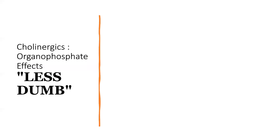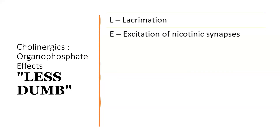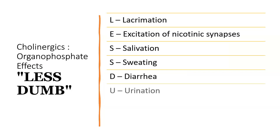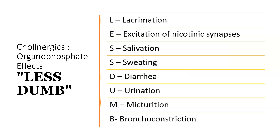For cholinergic and organophosphate effects, use the mnemonic LESS DUMB: L for lacrimation, E for excitation of nicotinic synapses, S for salivation, S for sweating, D for diarrhea, U for urination, M for micturition, and B for bronchoconstriction.